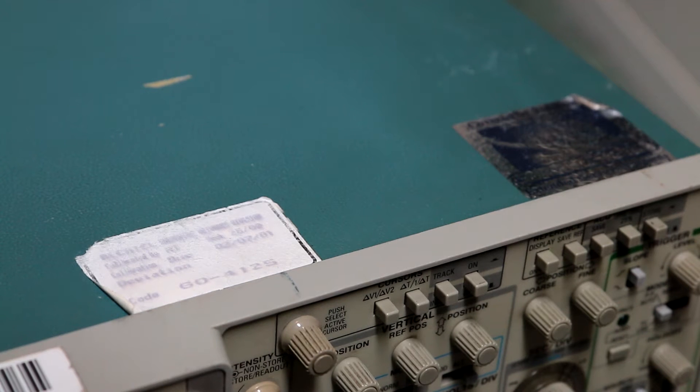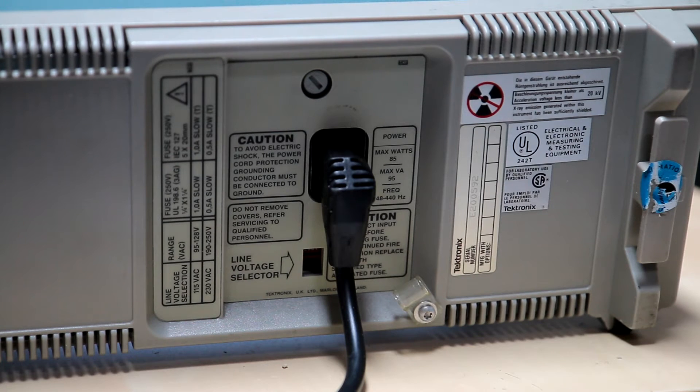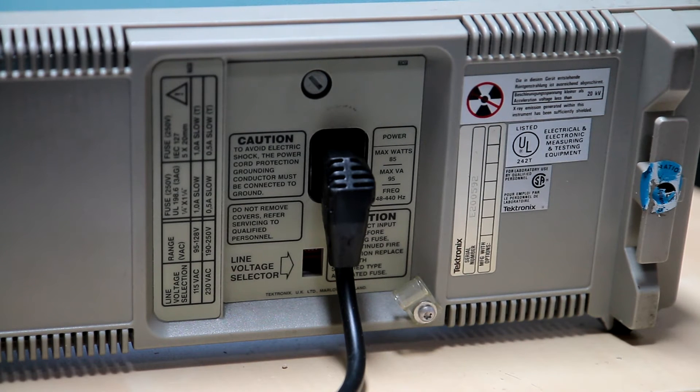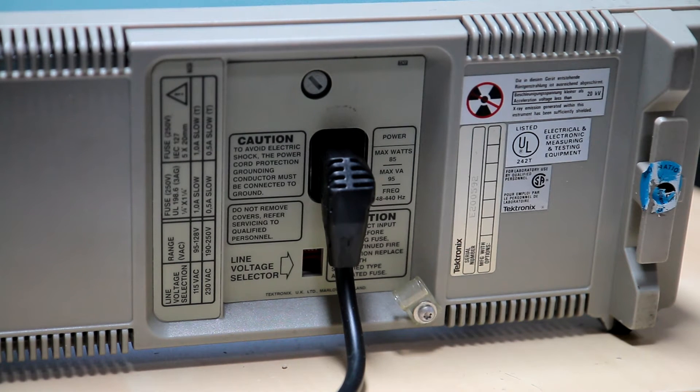Never mind, it'll work okay. These are made to last, these old scopes. Quick look at the rear panel. You've got your standard IEC mains input, voltage selection switch, and the placard for a serial number. If you look it's quite low actually, it's only 592.